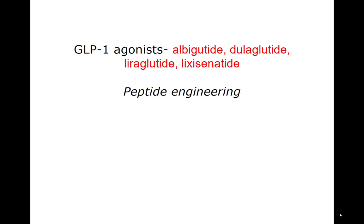In the final part of the lecture we shall be looking at an important target for antidiabetic drugs. We'll see a variety of different drugs that work through this mechanism, which can be grouped into two classes: GLP-1 agonists, which we'll look at first, and inhibitors of dipeptidyl peptidase DPP-4. Both pathway effects are the same for both families of drugs, which is why we're treating them together.